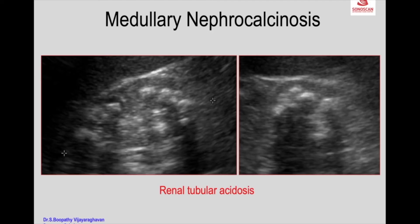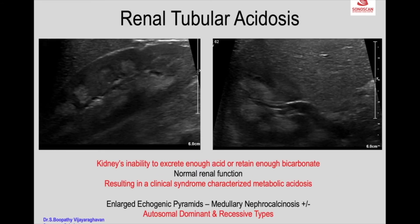Medullary nephrocalcinosis may vary because it is large, as seen here. Medullary nephrocalcinosis has autosomal dominant and recessive types.